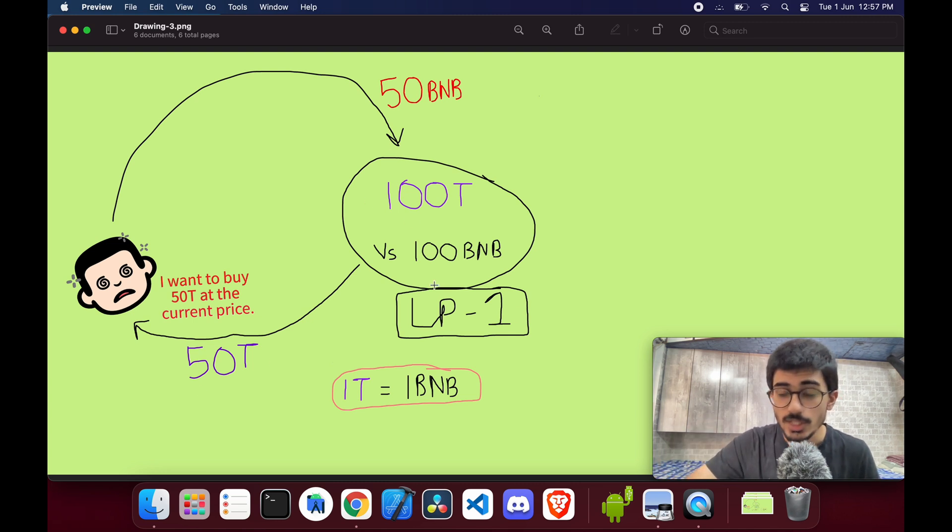Now in the real world, this liquidity pool would be way larger - not 100 BNB but way larger than that, and not 100 tokens, it'll be way larger than that as well. So doing such a transaction in this example will change the value to a large extent, and I've purposefully done that so that you see how much the value changes and how it all affects. But for now, just understand that he won't get 50 tokens if he does that.